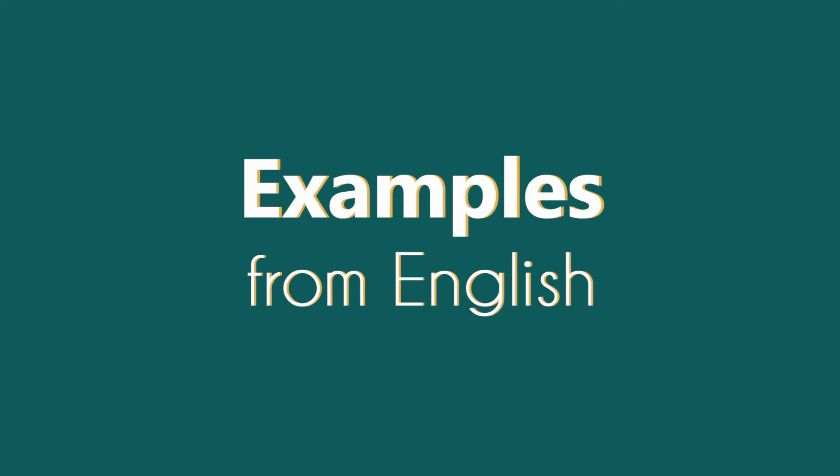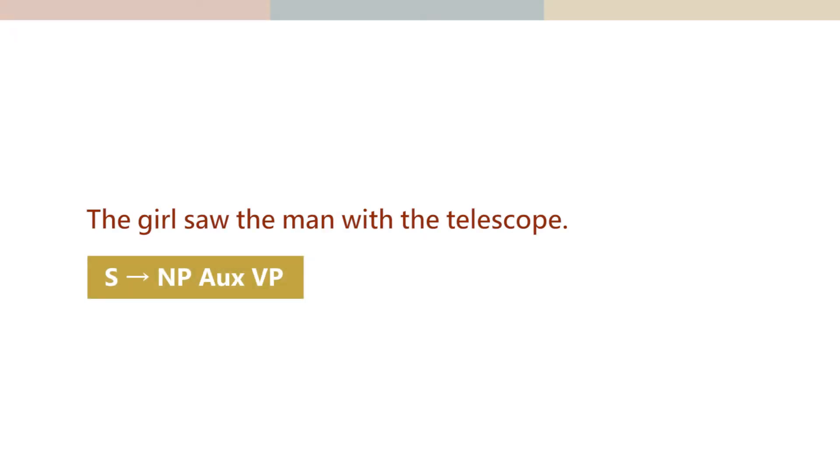Another ambiguous sentence: 'The girl saw the man with the telescope.' How is that ambiguous? It is ambiguous, again. Was it the seeing that was done with the telescope? Or was it the man that had the telescope?